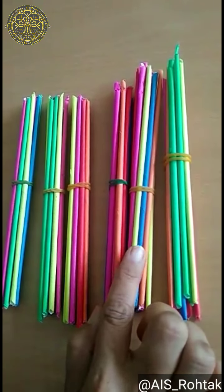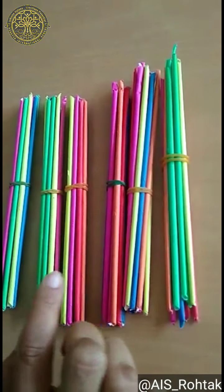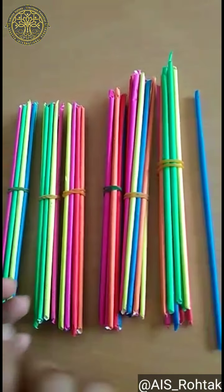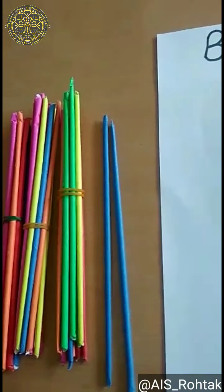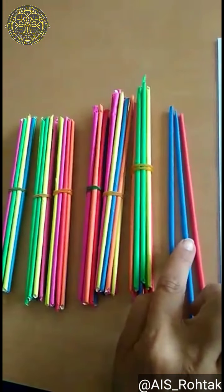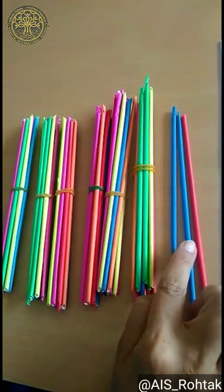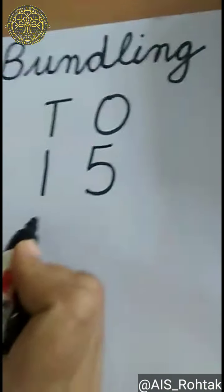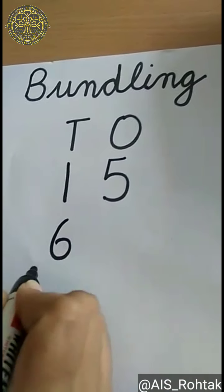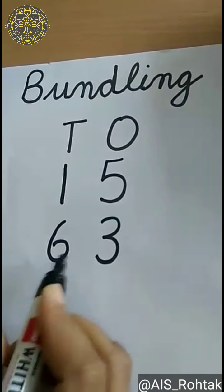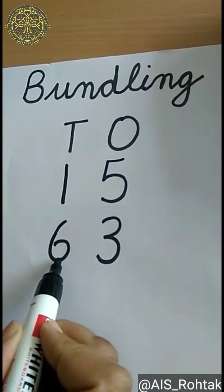6 tens and some loose ones also. 1, 2, 3. How many ones? 3 ones and 6 tens. So how will I write? 6 tens and 3 ones becomes 63.